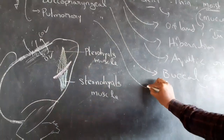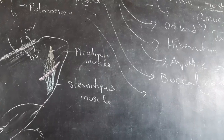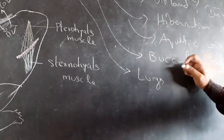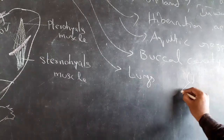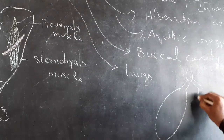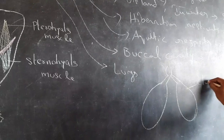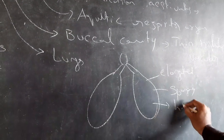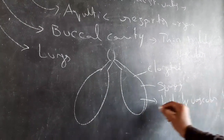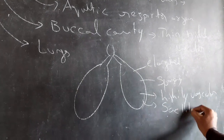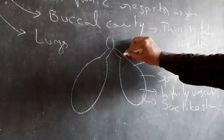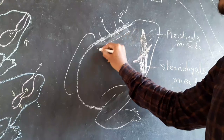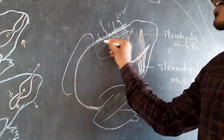Pulmonary respiration takes place by lungs. Lungs are elongated, spongy, highly vascular sac-like structures. These lungs are present on the upper part of the trunk region.